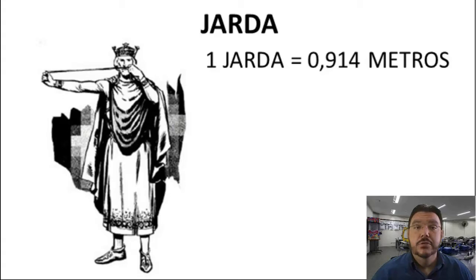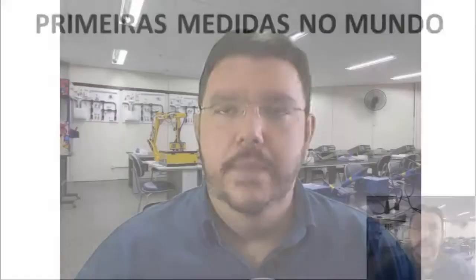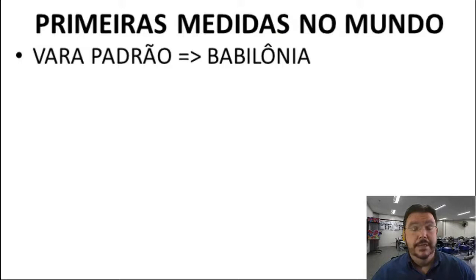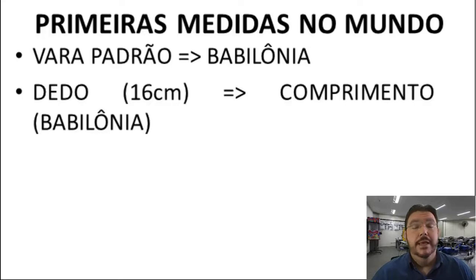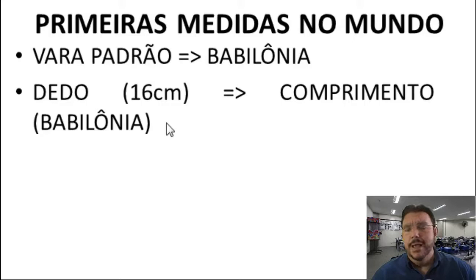A partir daí foram se estabelecendo as medições e as primeiras medidas no mundo. Por exemplo, se estabeleceu a vara padrão na Babilônia. O dedo equivalia a 16 centímetros — uma unidade de comprimento na Babilônia, que corresponde ao atual Iraque, uma região muito próspera antes de Cristo. O pé, equivalente a 30 centímetros, ainda é utilizado na aviação para indicar altitude.